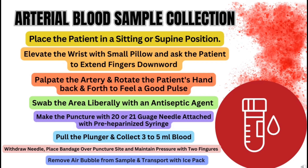Immediately remove the air bubbles from the syringe and then immediately analyze the blood through automatic analyzers or manually. A very important point: if you have to transport the blood within 5 to 15 minutes, you must transport the sample with an ice pack or under low temperature so that the gas values remain unchanged for at least 15 to 20 minutes.